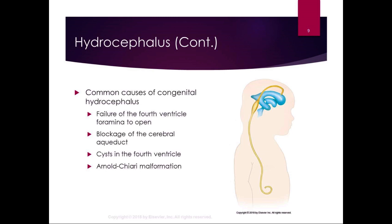I worked with one older man who had normal pressure hydrocephalus — we were working on gait and balance. He could get pretty cognitively overloaded, which I think was the frontal lobe effect. If the gym was too crowded or he was really tired, he had much more difficulty with balance and gait. Working in a quiet room, making sure he wasn't too tired, and taking appropriate rest breaks was really helpful. He had a shunt in place and was improving — he came in walking with a walker and eventually was able to progress to tracking poles or a cane.